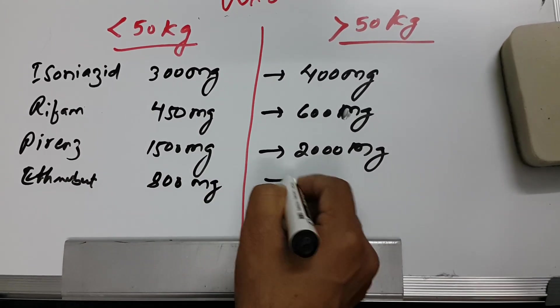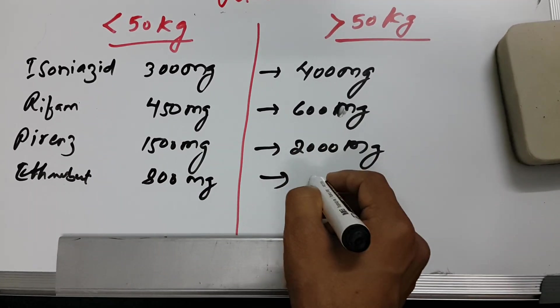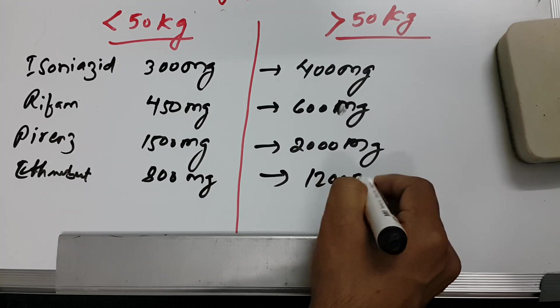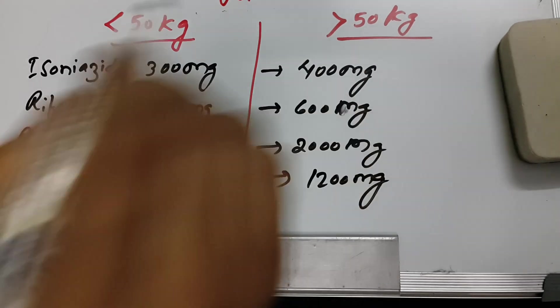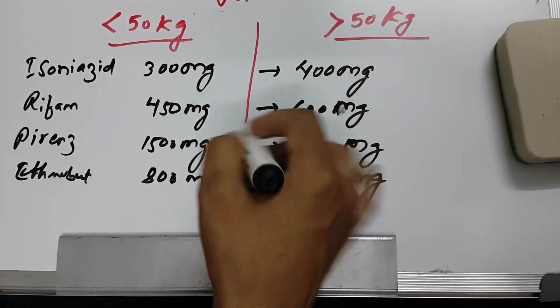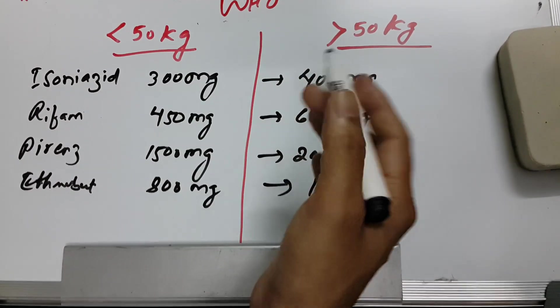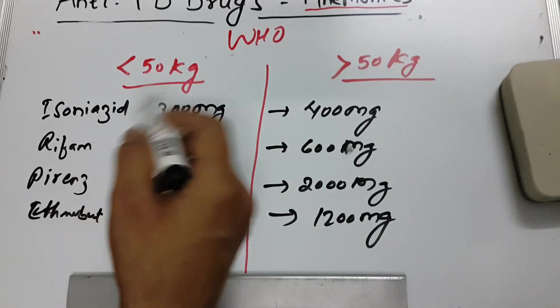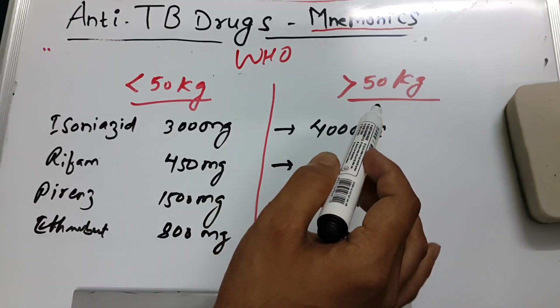Ethambutol: 800 mg if less than 50 kg, and 1200 mg if more than 50 kg.